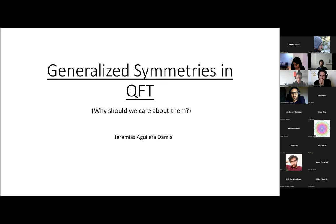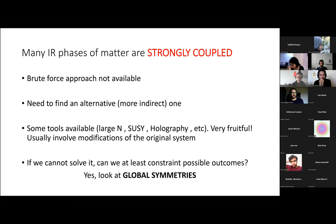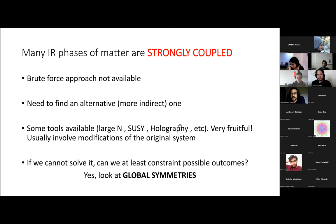I guess I don't have to convince you that strong coupling is something very recurrent in our daily work. Many IR phases of different physical systems are usually strongly coupled, mostly in four dimensions and below. So we know that we cannot go around just computing Feynman diagrams — we need to find an alternative way to obtain results for observables. There is an additional handle that was always there for almost any physical system: global symmetries, which we can use to at least constrain possible outcomes of dynamical processes.